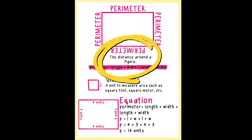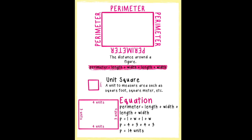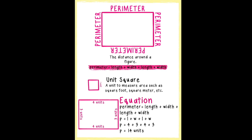If perimeter is the distance around a figure, how do we measure it? We use a unit square. A unit square is a unit to measure area, such as square foot, square meter, etc. Each problem will tell you which unit of measurement to use.